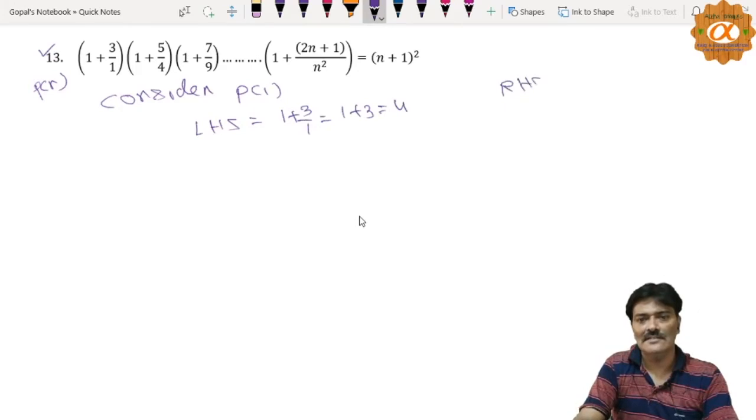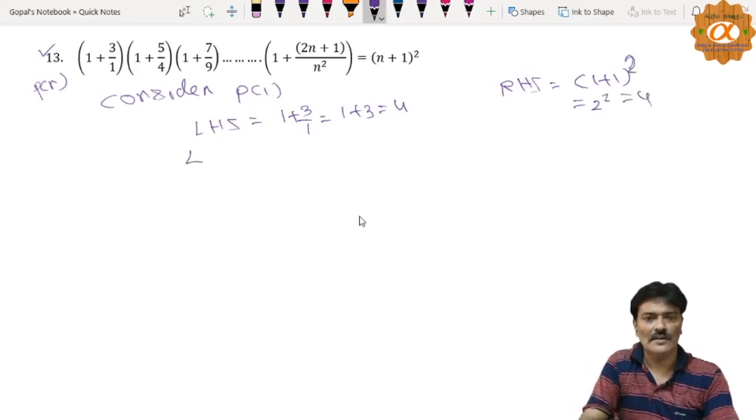Now RHS is equal to 1 plus 1 square, that is equal to 2 square, and that is equal to 4. LHS is equal to RHS.